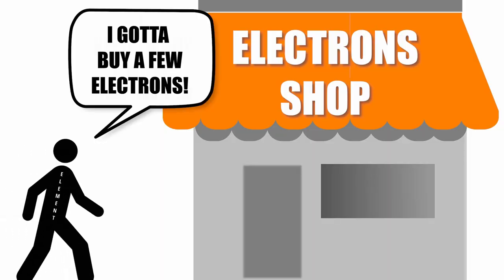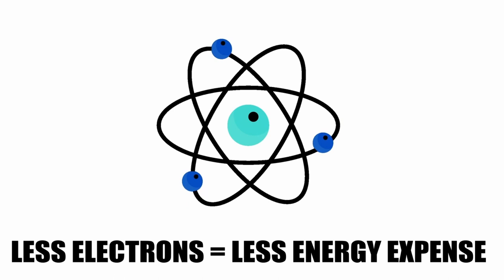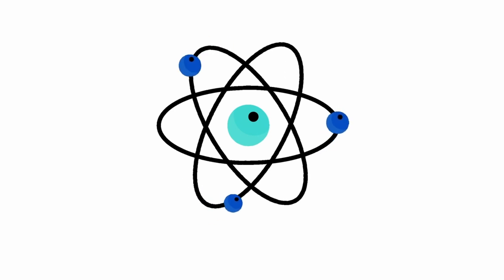Basically, an element can buy more electrons to fill its ultimate shell, or sell them to empty it. The fewer electrons involved, the less the energy expense. The trades requiring the least amount of energy are the ones most likely to occur.